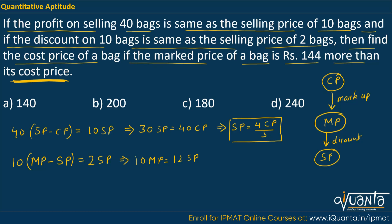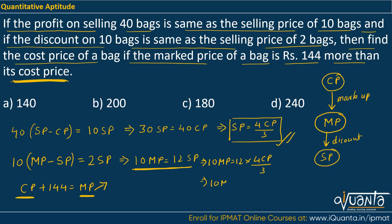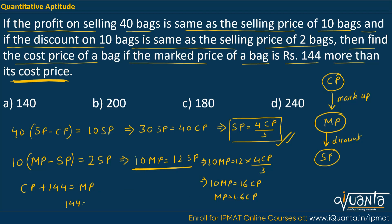We're given that the mark price of a bag is Rs. 144 more than the cost price, so if you increase cost price by 144 you get the mark price. We have the third equation relating MP and CP. If we put SP in terms of CP, we get MP in terms of CP. Writing 10 MP equal to 12 SP, substituting SP as 4 CP upon 3, gives us 10 MP equal to 16 CP, or MP equal to 1.6 CP. Putting MP equal to 1.6 CP into the condition gives us 144 equal to 0.6 CP, so CP equals 240.